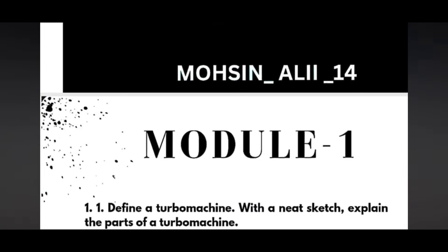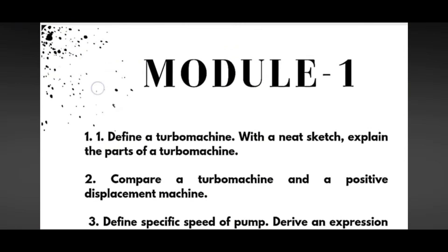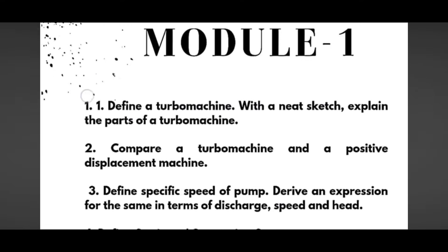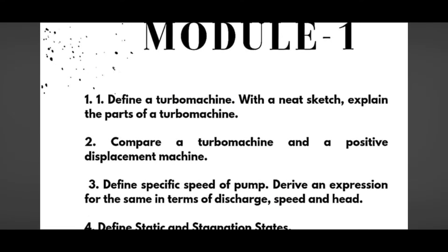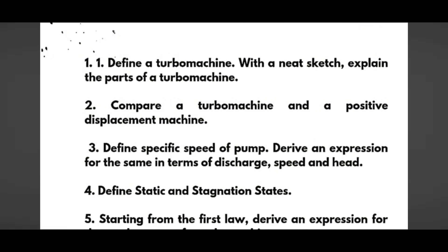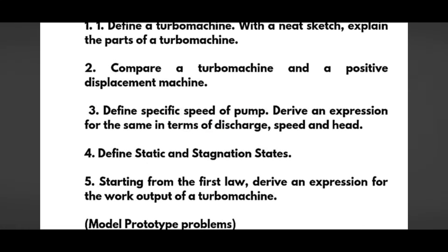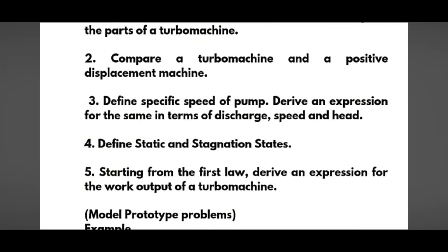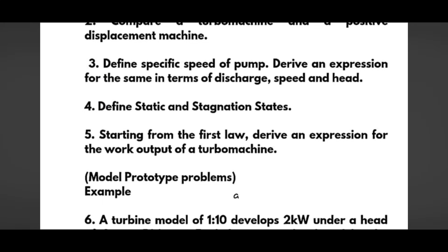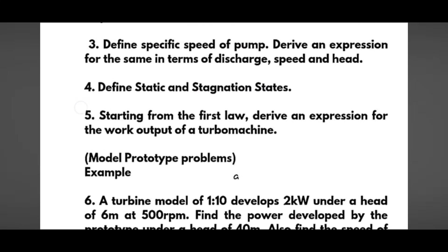Let me discuss here module wise one by one. In Module 1, you have to go through the super important questions like: define a turbo machine with a neat sketch, explain the parts of a turbo machine, and compare a turbo machine and a positive displacement machine — this may be a seven or eight marks question. Next, define specific speed of a pump and derive an expression for the same, that is derive an expression for specific speed in terms of discharge, speed, and head. Also, define static and stagnation states for a fluid and starting from the first law derive an expression for the work output of a turbo machine.